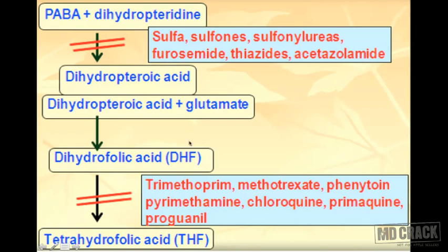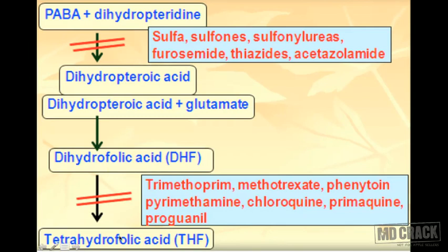To prevent methotrexate toxicity, you might think of giving folic acid — but since methotrexate is preventing the conversion of folic acid to folinic acid, there is no point giving folic acid. It is better to give folinic acid directly. So in methotrexate toxicity, we give folinic acid.